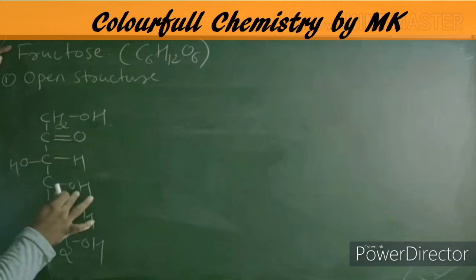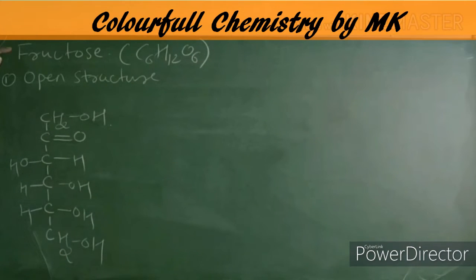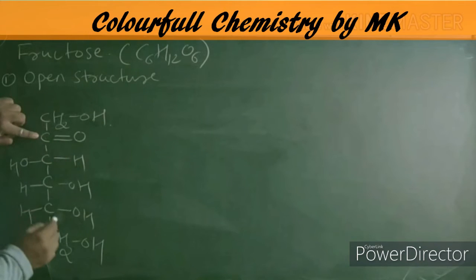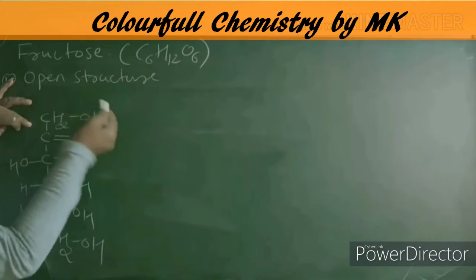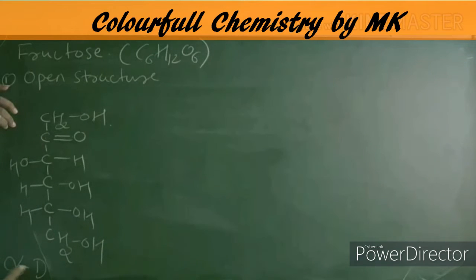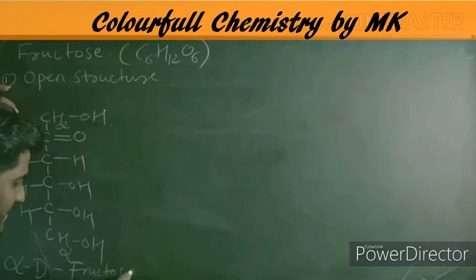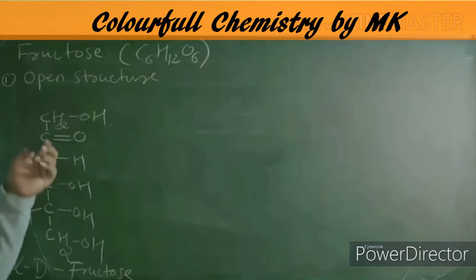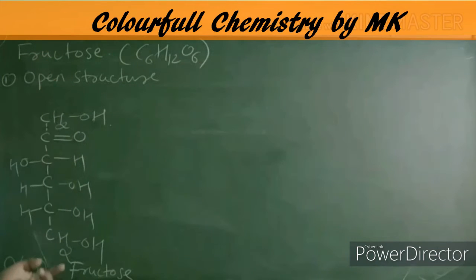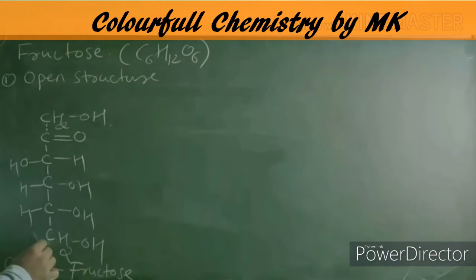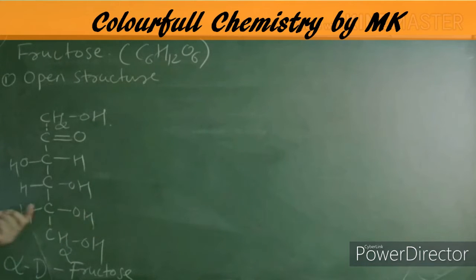In the open structure of fructose, the ketone group is at carbon two. The last but one carbon has OH on the right side, so this is D-fructose, specifically alpha-D-fructose. For beta-D-fructose, just exchange that last OH to the left side — all other groups remain the same.